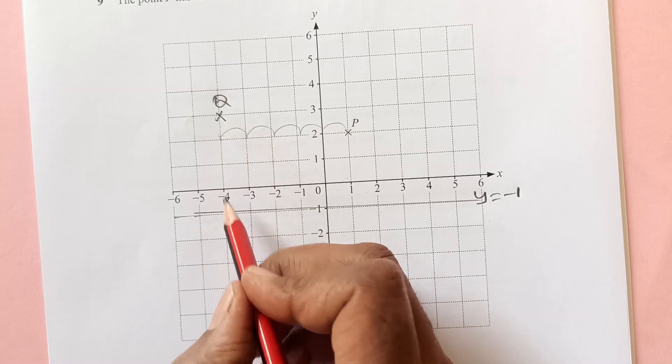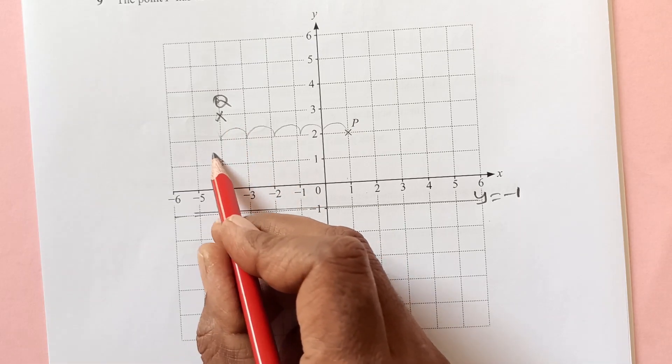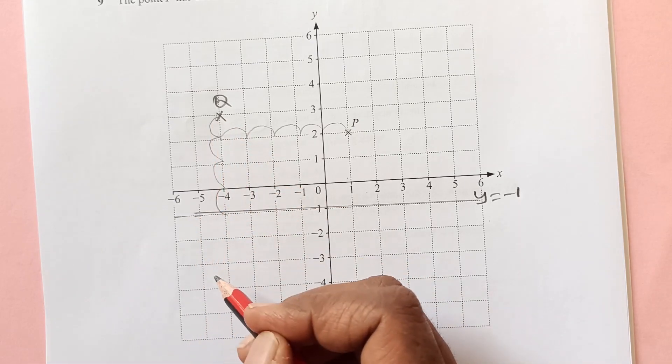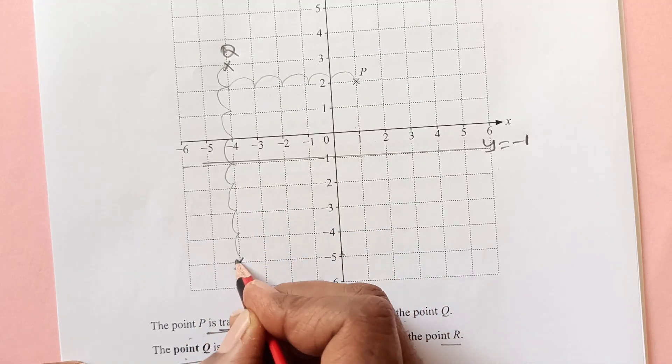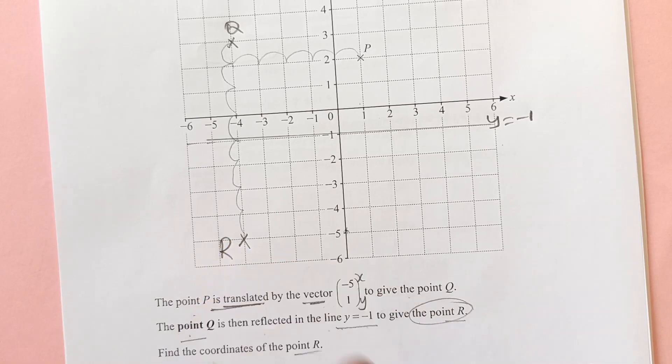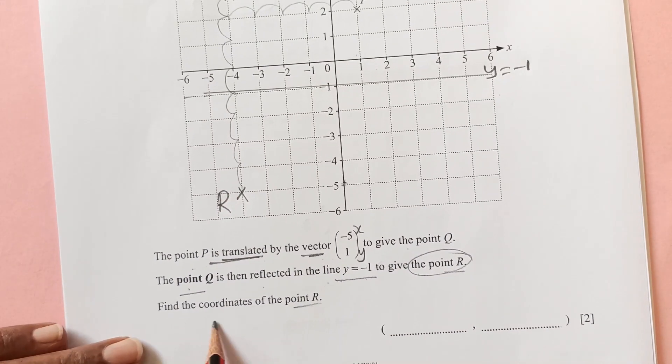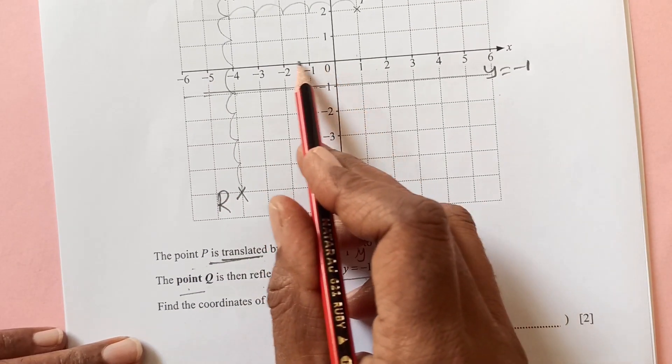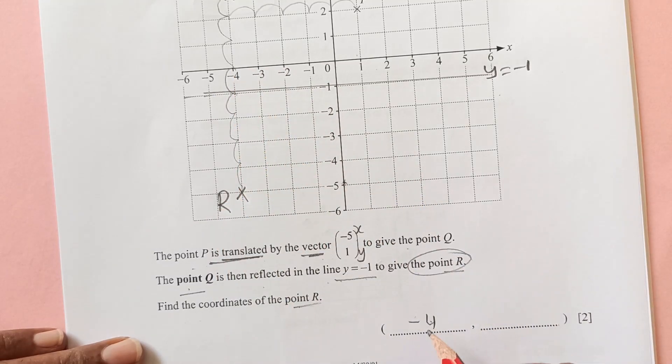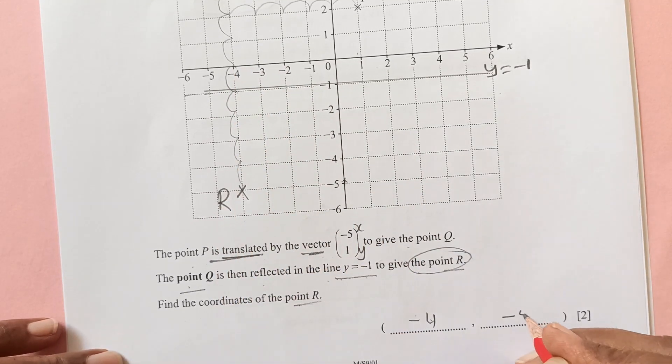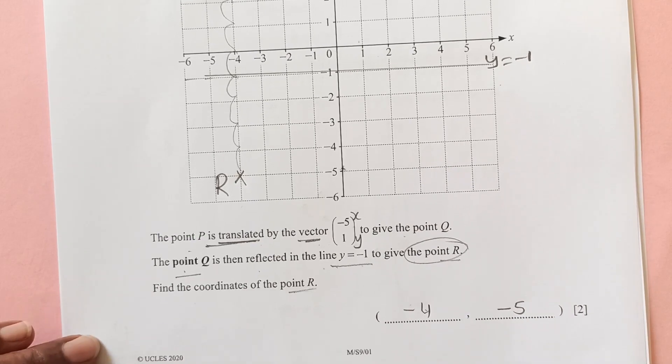y negative 1 is here. You see this line y equals to -1 is this line. This point is now reflected. Reflected means its reflection will come here. From this mirror line, how many squares this Q is away from this line? 1, 2, 3 and 4. So same it will come down 1, 2, 3 and 4. This is your point R. So R is -4 for x and -5 for the y coordinate.